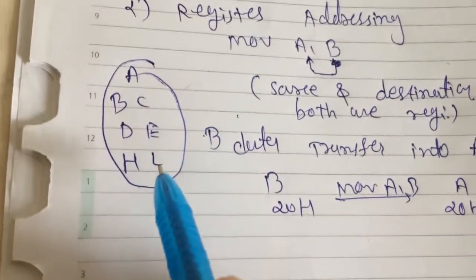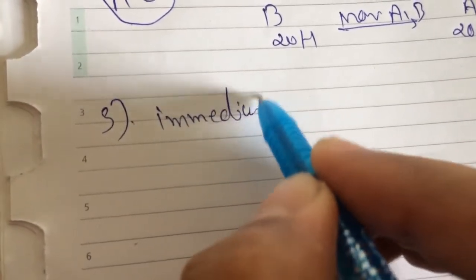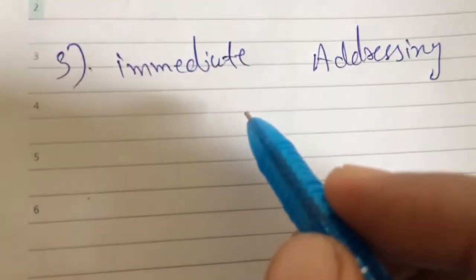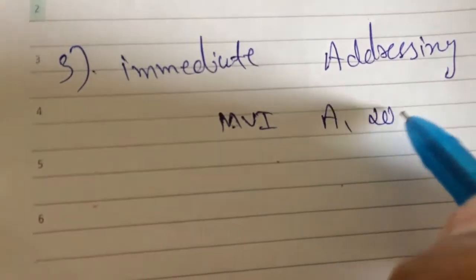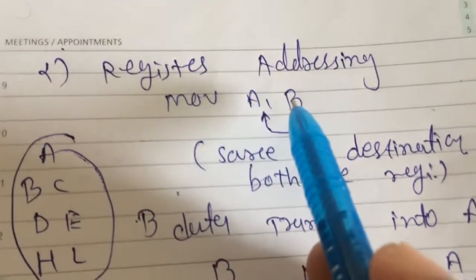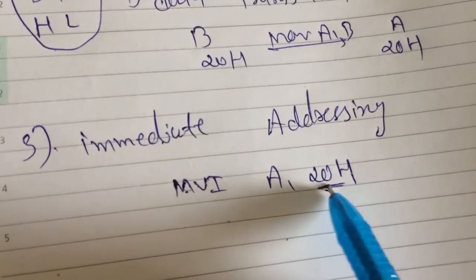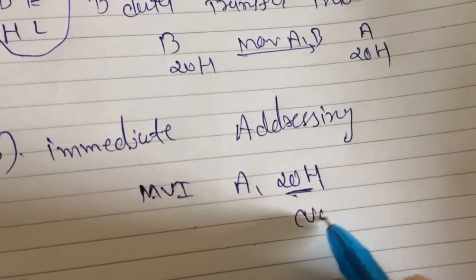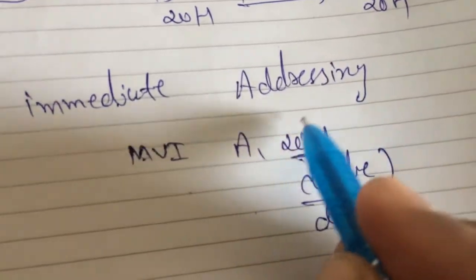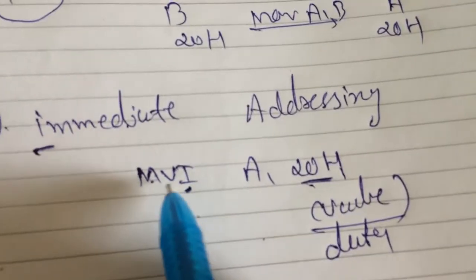We now move to our next addressing mode, that is Immediate Addressing Mode. In immediate addressing mode, a value is directly specified as the source. In register addressing mode, we specify a register as the source, but in immediate addressing mode, we specify a value or data directly. The shortcut instruction here is MVI.